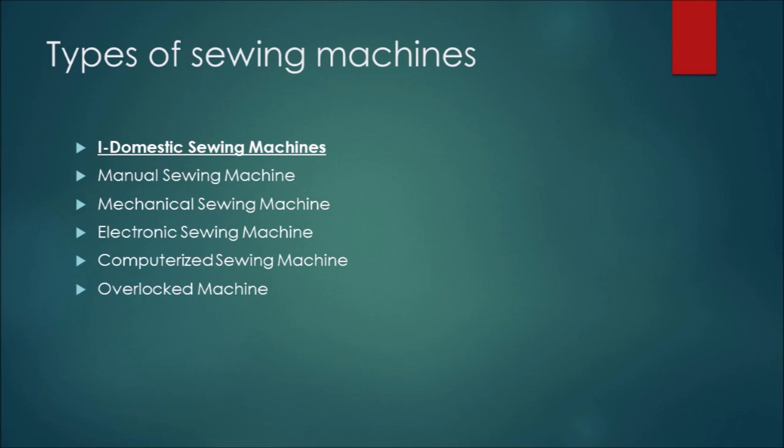Number five: overlocker machine. It allows us to make professional edges and solve the problem with clothes.